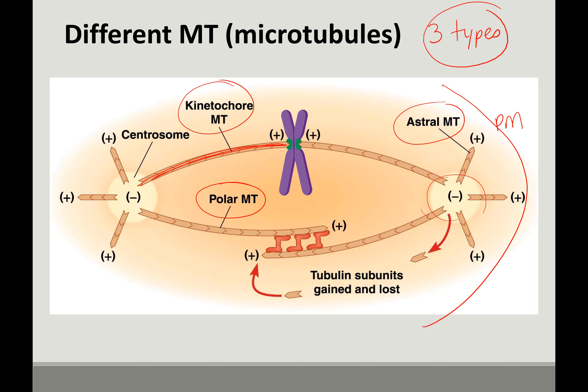The third type of microtubule is called the polar microtubules. These actually attach to each other through motor proteins. They are connected from the centrosome area, they attach to each other, and they help give the push as we push the centrosomes apart during cell division.